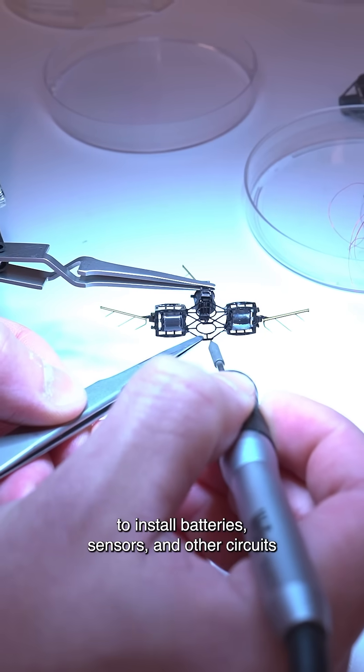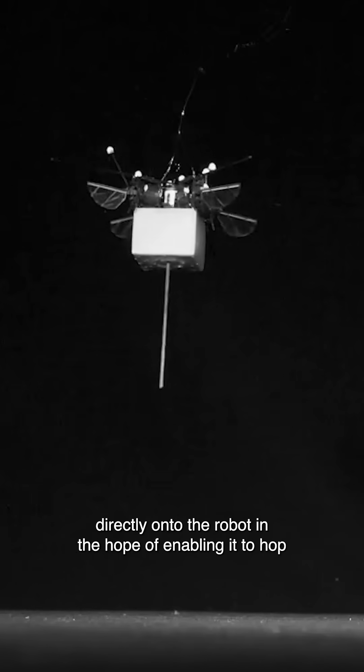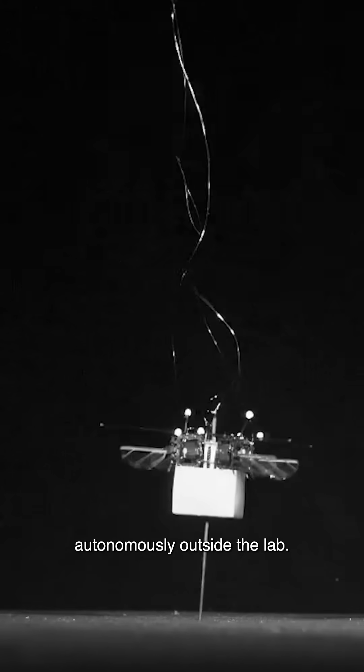Moving forward, the researchers plan to install batteries, sensors, and other circuits directly onto the robot, in the hope of enabling it to hop autonomously outside the lab.